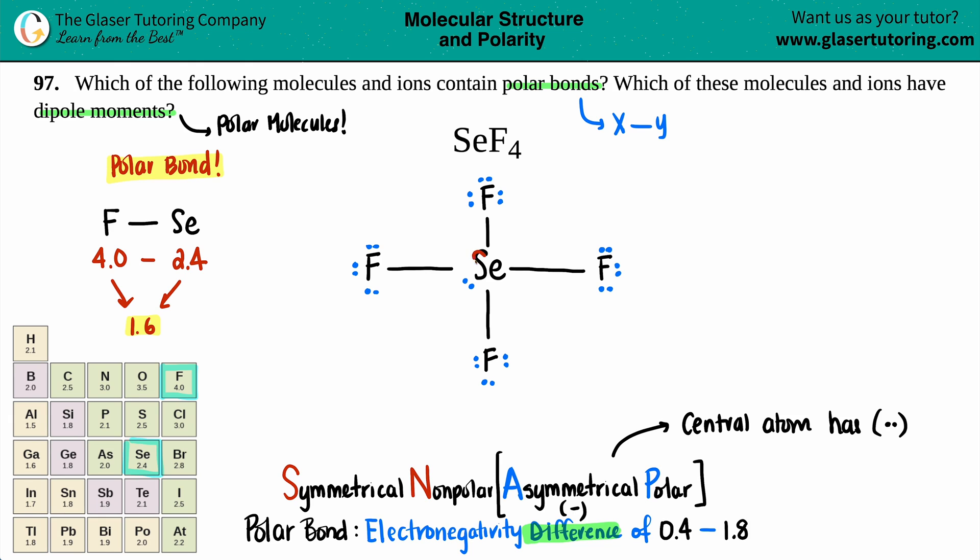So our central atom, which is selenium, it does have two electrons. It does have a lone pair. So right off the bat, you know that this is a polar molecule. And because it's a polar molecule, polar molecules have that dipole moment. That means that there's an unequal sharing somewhere of the electrons in the structure. And it can be seen with the lone pairs.